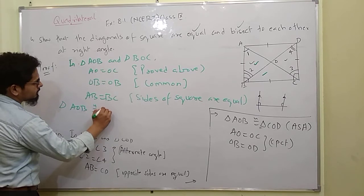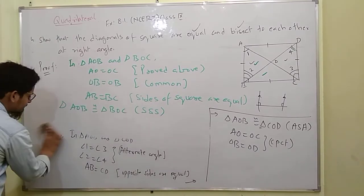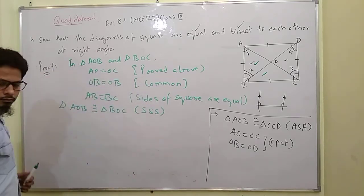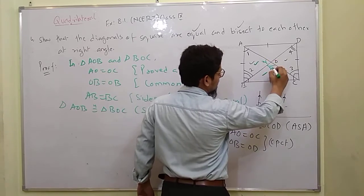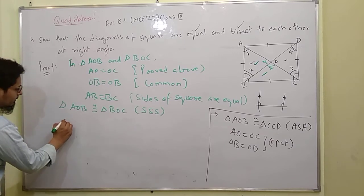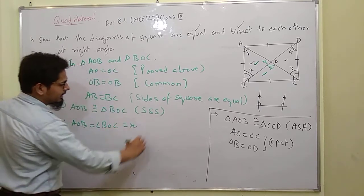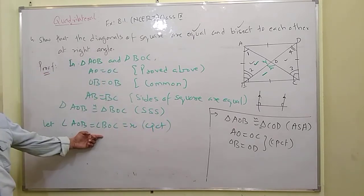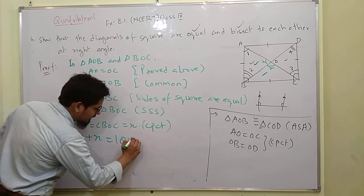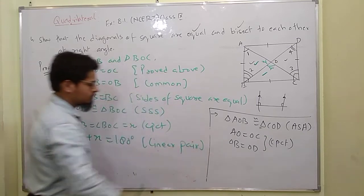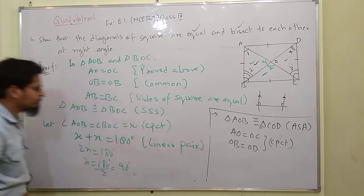So triangle AOB is congruent to triangle BOC — by side-side-side. By CPCT, angle AOB is equal to angle BOC. Let this angle be X. By linear pair, X plus X equals 180 degrees. So 2X equals 180 and X equals 90 degrees. Therefore angle AOB and angle BOC each become 90 degrees.